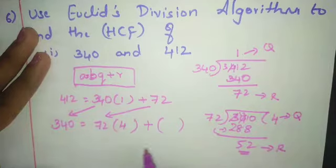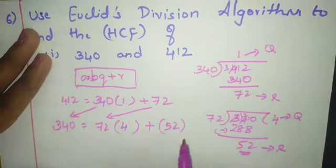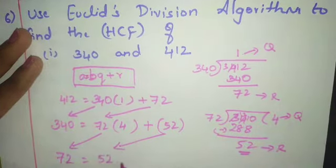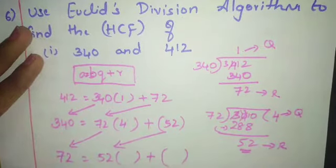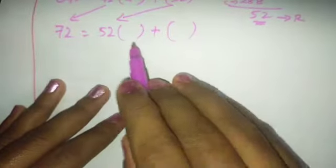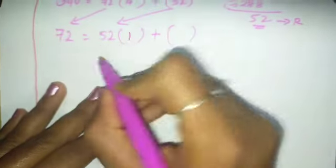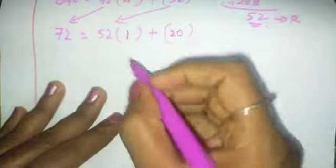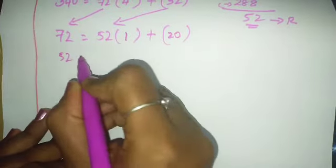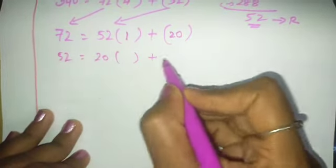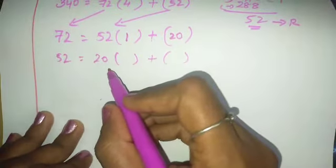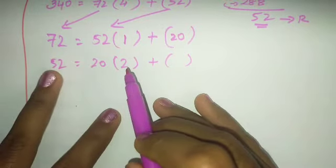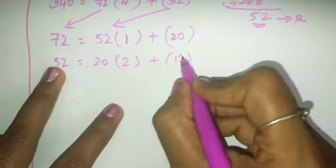Now take 72 = 52 × something + remainder. 52 × 1 is 52, subtract from 72 to get 20. Then take 52 = 20 × something + remainder. 20 × 2 is 40, subtract from 52 to get 12.